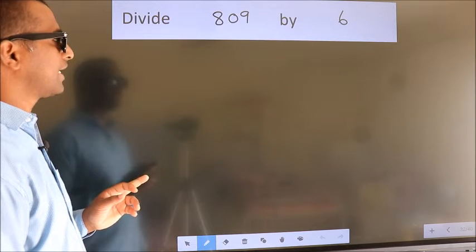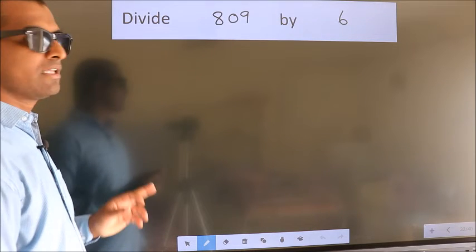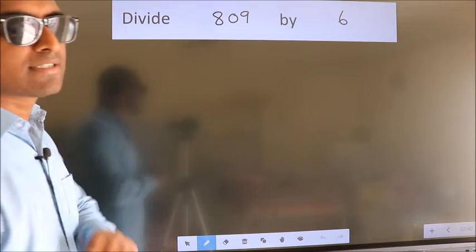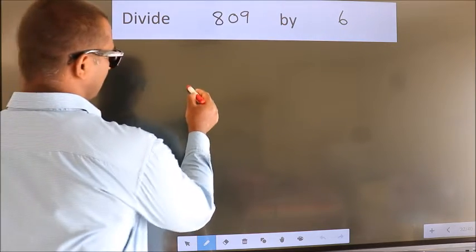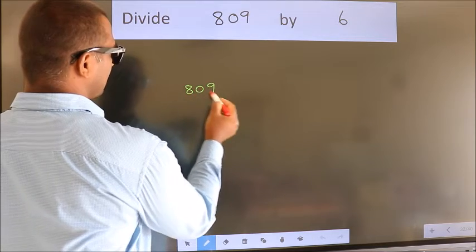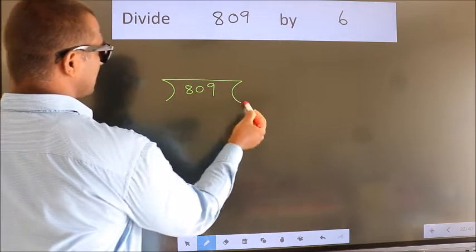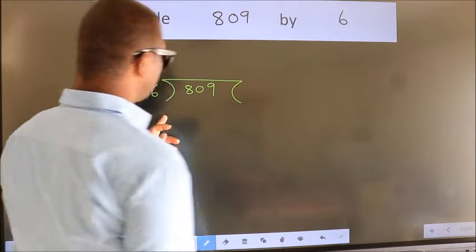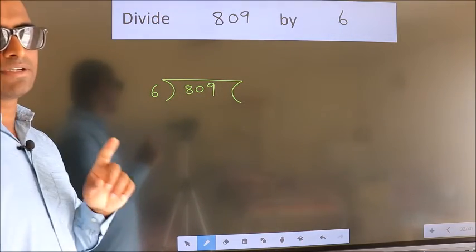Divide 809 by 6. To do this division, we should frame it in this way. 809 here, 6 here. This is your step 1.